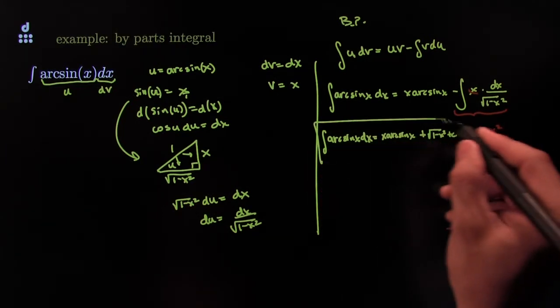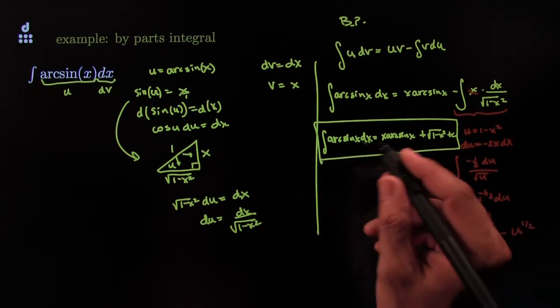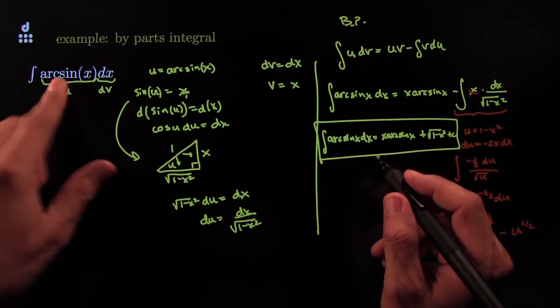plus a constant. That, my friends, is one way to do the anti-derivative of arcsine.